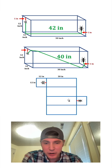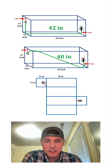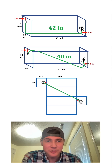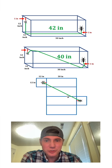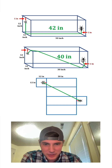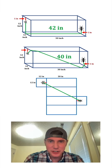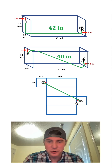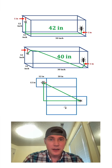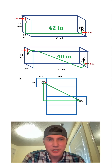And now looking at it this way, what is the shortest distance from the ant to the honey? Well, it's going to be this green line right here. And this green line is the same thing as this green line right here on the box. To figure out the length of this green line, we can complete the right triangle and figure out the lengths of each of the legs of the right triangle.